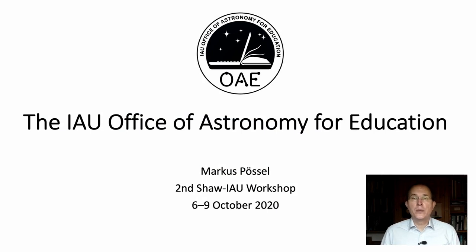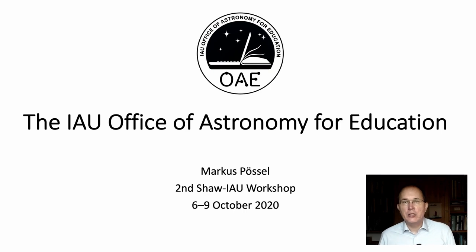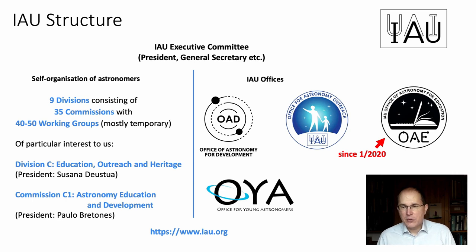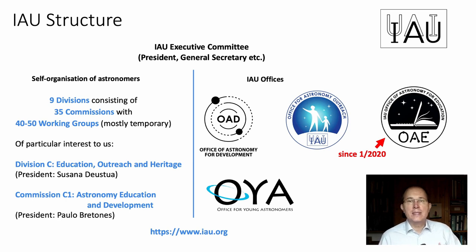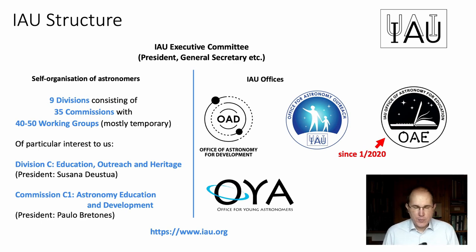Now that we have heard quite a lot about various aspects of the structure of the International Astronomical Union, let's have a look at how the Office of Astronomy for Education fits into that structure. I brought you this little diagram, which basically is an overview diagram. On the left you have everything that is the self-organization of astronomers within the IAU — where the scientists, the researchers, the IAU members get together to talk about and make decisions about certain topics.